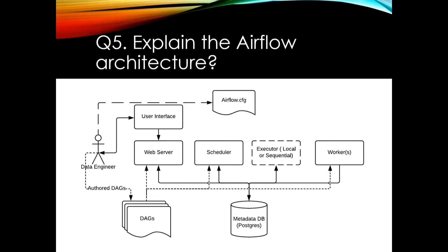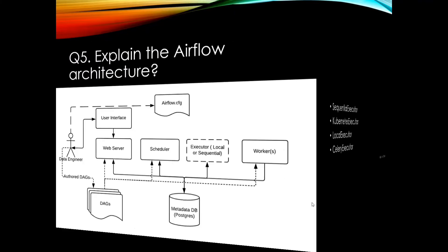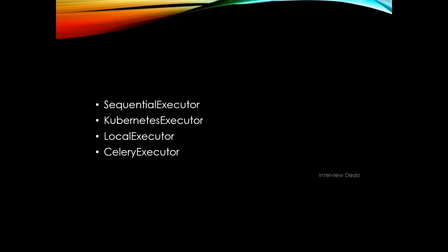We also have the metadata database. Apache Airflow supports an extensive range of metadata storage databases. Information related to DAGs is stored there, and it helps run the Airflow configuration — like connections, roles, and users. The database is used by the web server to display all details to users about the run and current status of DAGs.